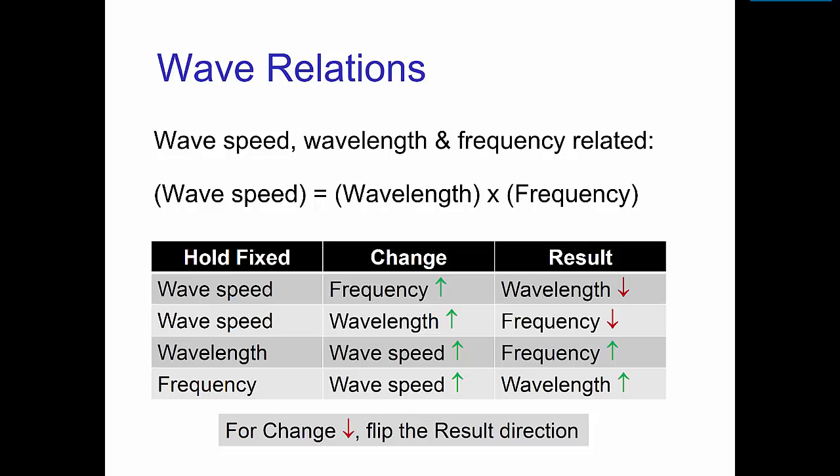As I said, the wave speed, wavelength, and frequency are related. Specifically, the wave speed equals the wavelength times the frequency. This equation is less important than the relations shown in this table. For example, if we hold the wave speed fixed and we increase the frequency, then the wavelength of the resulting waves goes down. In other words, the higher the frequency, the shorter the waves.